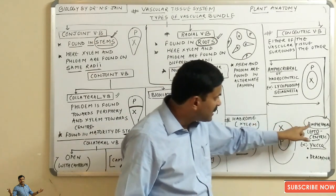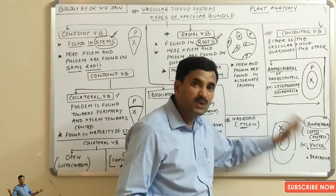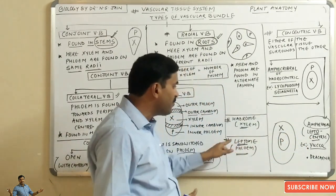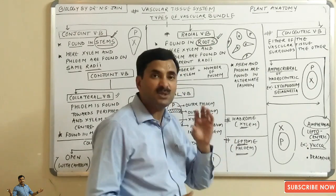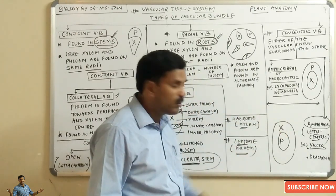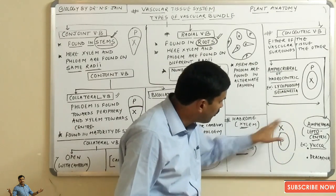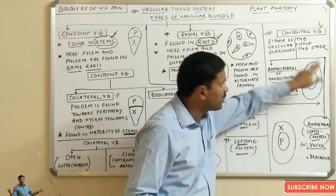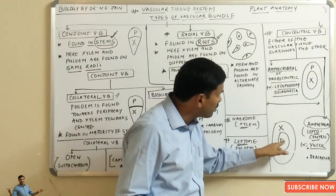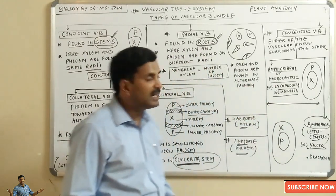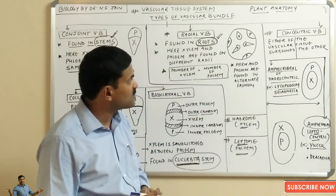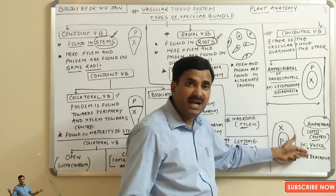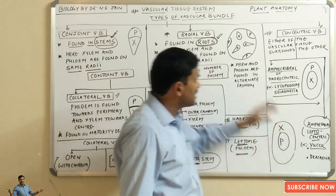The second type is the Amphivasal vascular bundle, also called Leptocentric. Leptocentric means phloem is present at the center and is surrounded from all sides by the xylem. So in Hadrocentric, xylem is at the center surrounded by phloem; in Leptocentric, phloem is at the center surrounded by xylem — that is why they are called concentric vascular bundles. The best examples of Leptocentric vascular bundles are Yucca and Dracaena.